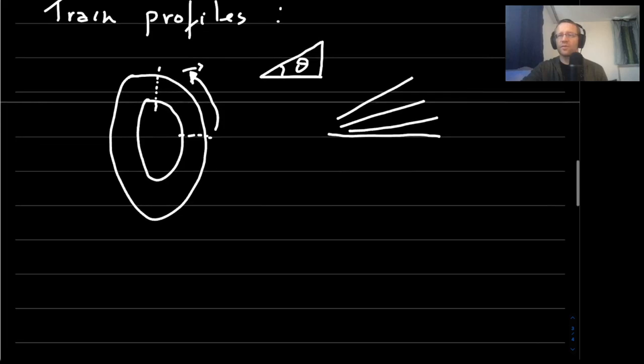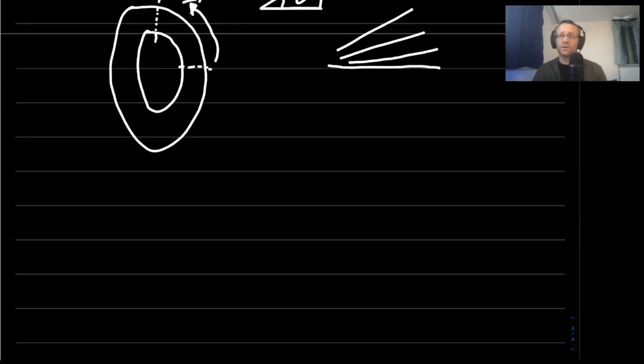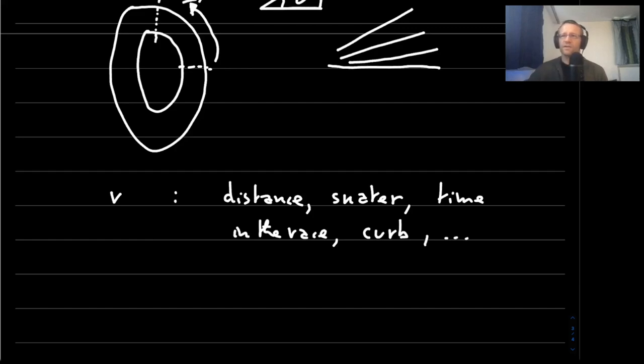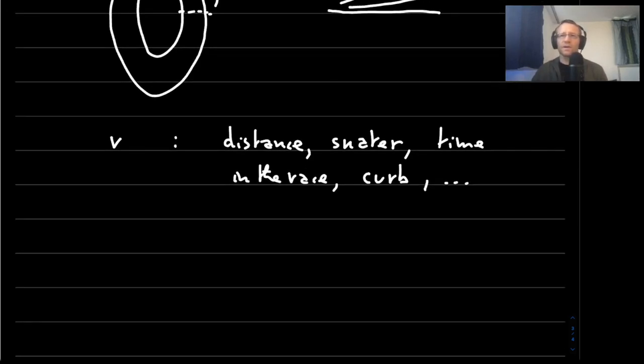But we can see a number of problems with this, which are that not all skaters have the same speed in all races. So the speed can depend on an extremely high number of variables like the distance of the race, the skater, the time in the race, the moment in the curve, etc.